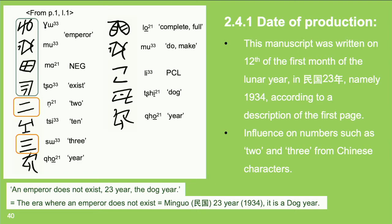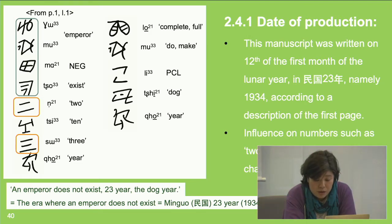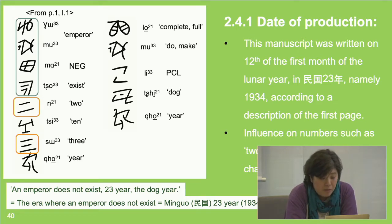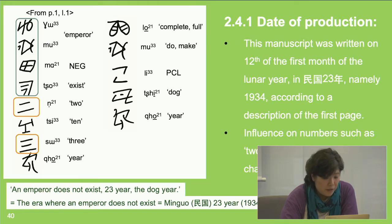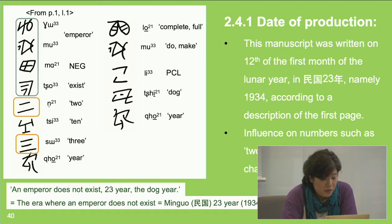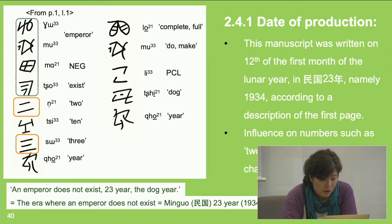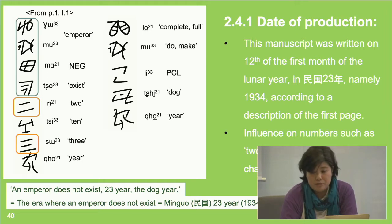According to the manuscript, it was written in 1934 — Minguo 23rd year. As we can see, 'an emperor does not exist' means Minguo: Umu mu means 'the emperor,' ma zhuo means 'doesn't exist,' and mtsi siko means '23rd year.' In the next line, lo means 'complete' or 'full,' so it means something like '23 years have passed'; mu means 'to make'; li is practical, expressing a topic marker; and qi kuo means 'the year.' So 'an emperor doesn't exist, that's why it means Minguo.'